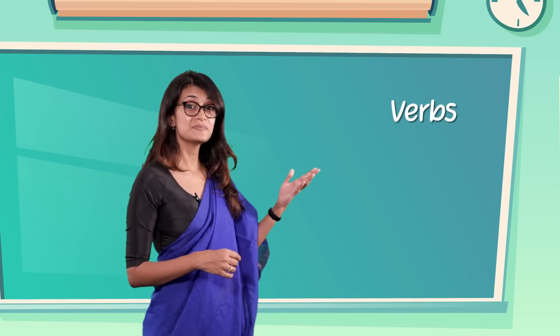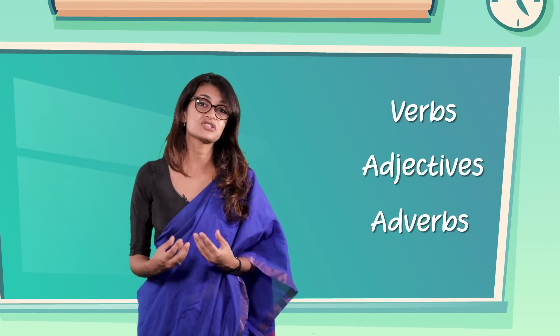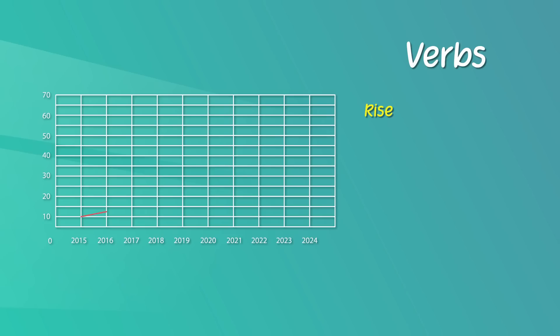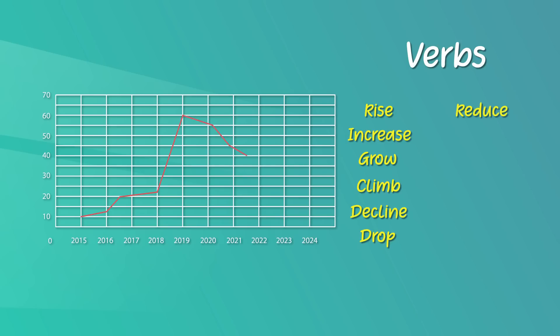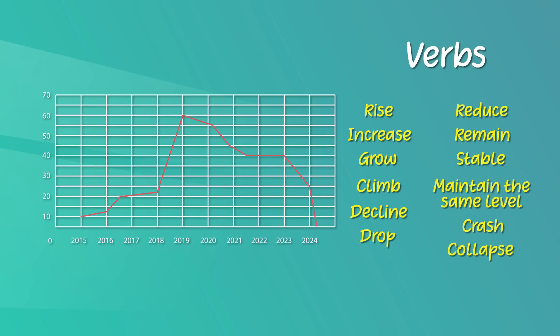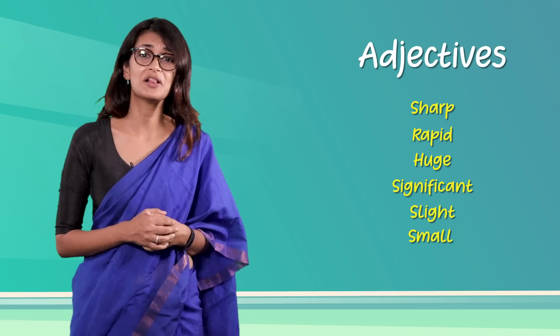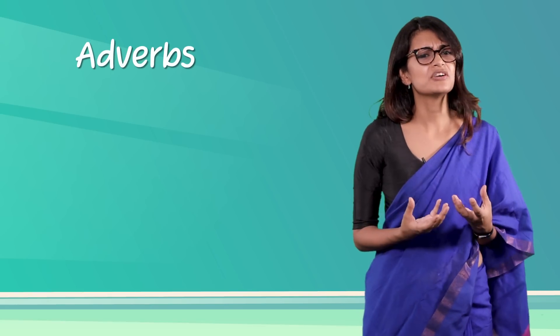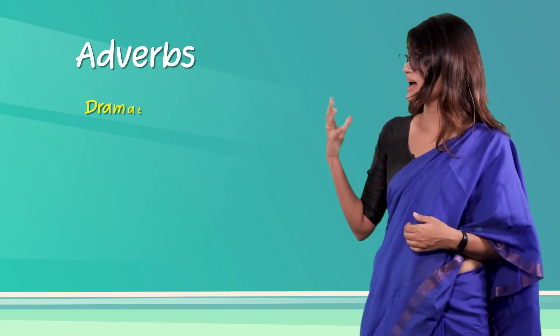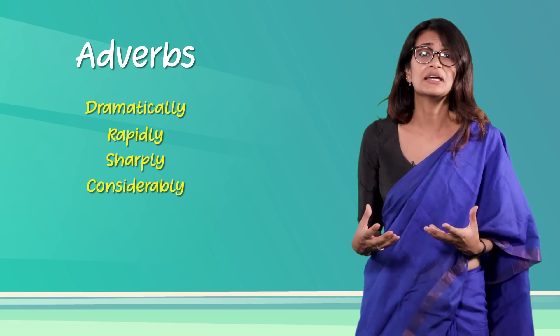These lines show movement over time affected by increases or decreases. To express the movement of the lines you should use the correct verbs, adjectives, and adverbs. You can use verbs such as: rise, increase, grow, climb, decline, drop, reduce, remain stable, maintain the same level, crash, collapse. You can use adjectives like sharp, rapid, huge, significant, slight, small for emphasis, and adverbs such as dramatically, rapidly, sharply, considerably, minimally, significantly.